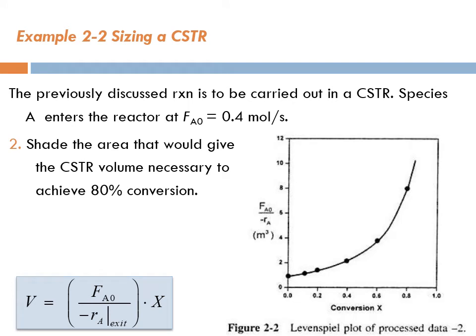Now, let's shade the area that would give the CSTR volume necessary to achieve 80% conversion. In this Levenspiel plot, can you shade the area that represents the volume of the reactor? Can we do this?